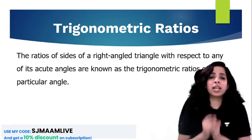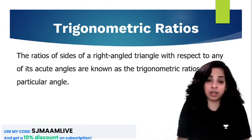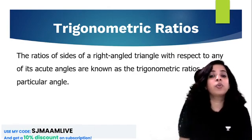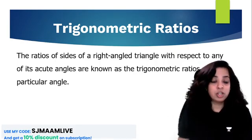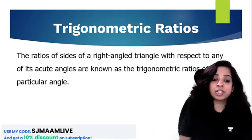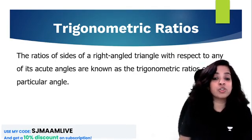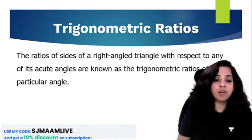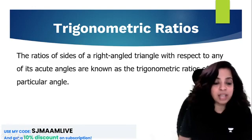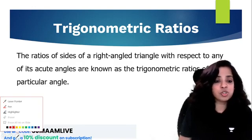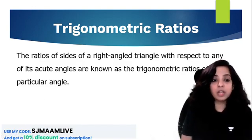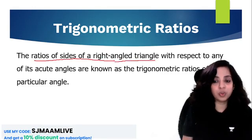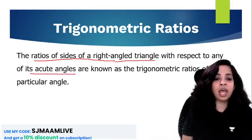Today I am going to explain a very good trick. We will be talking about trigonometric ratios. The ratios of sides of a right angle triangle with respect to any of the acute angles is known as trigonometric ratios of that particular angle.